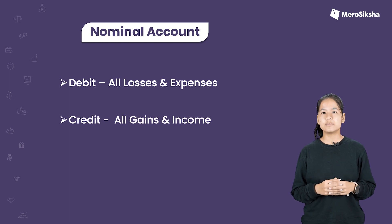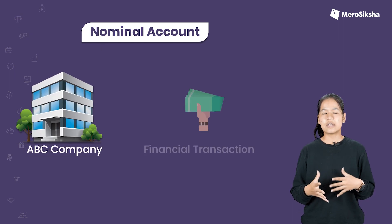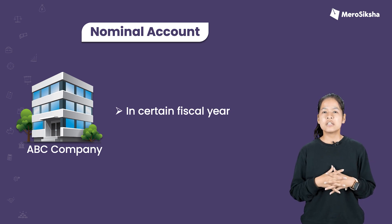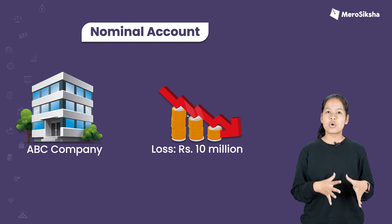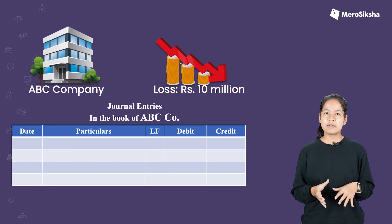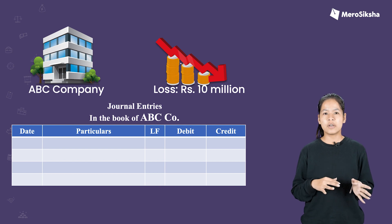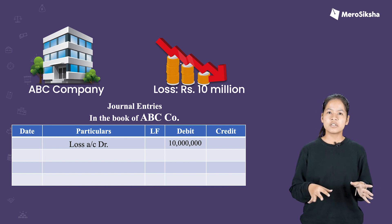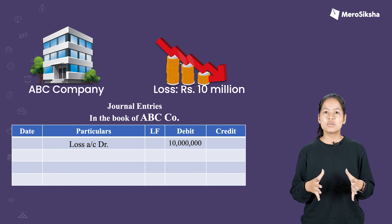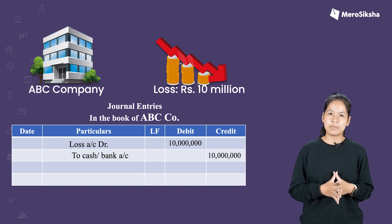Now, here is an example with ABC company. In a certain fiscal year, the company has sales of 10 million and a loss. We have to make a journal entry. For the loss, it is a loss account, so we keep it on the debit side. For income and gains, we put them on the credit side. Cash or bank account goes on the credit side.